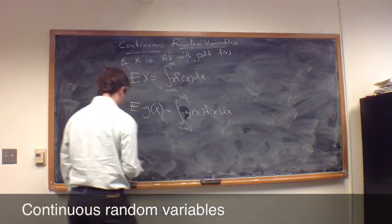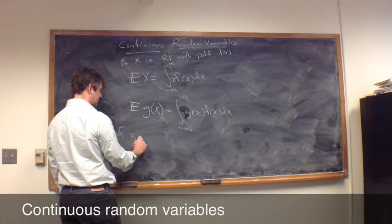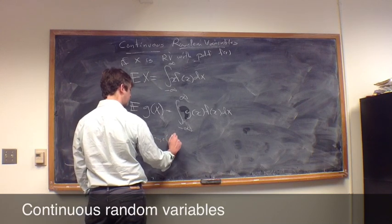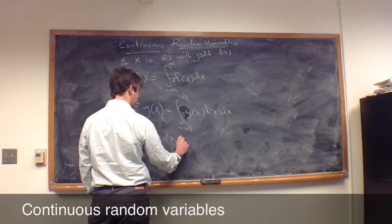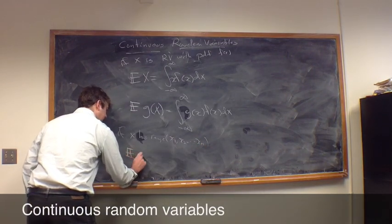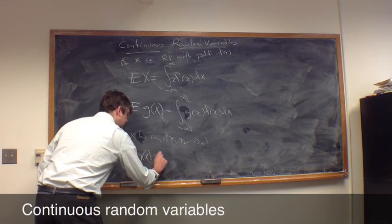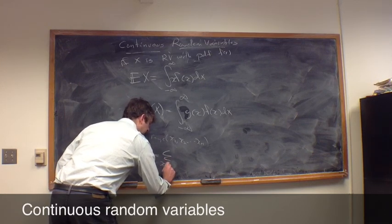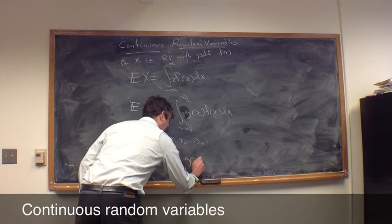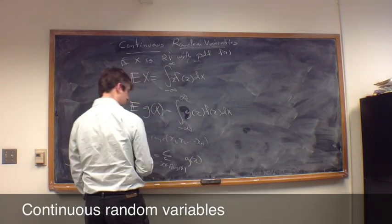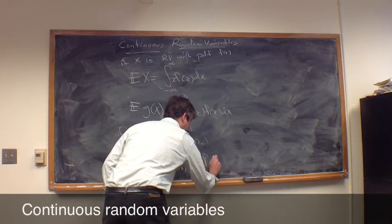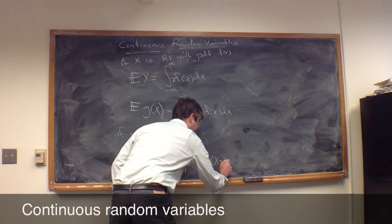And this should be compared with if x has a discrete range, x1, x2, up to xn, let's say, then the expected value of g of x was the sum over little x in the range of x, g of little x times the probability mass function, which we have been mainly writing as the probability that x is equal to little x.